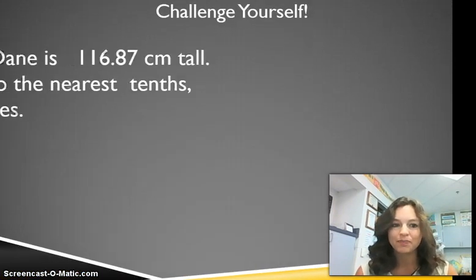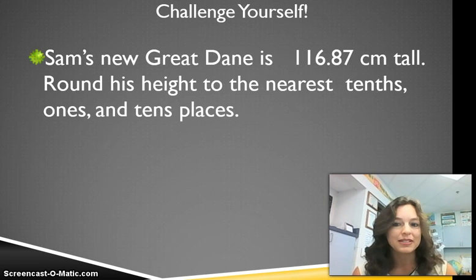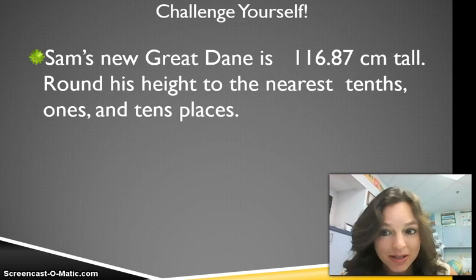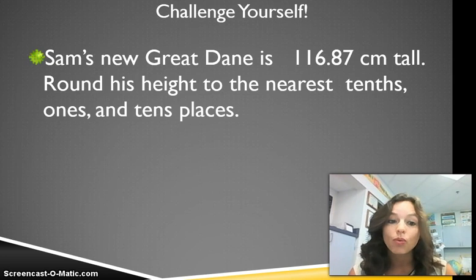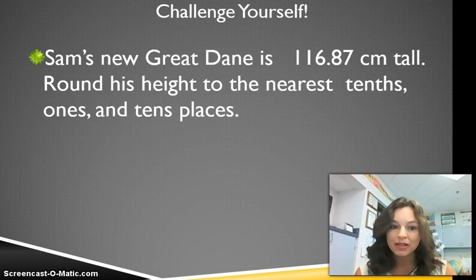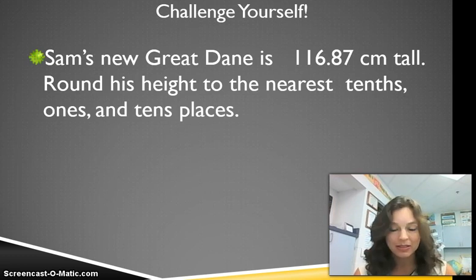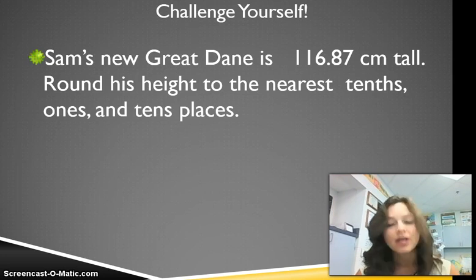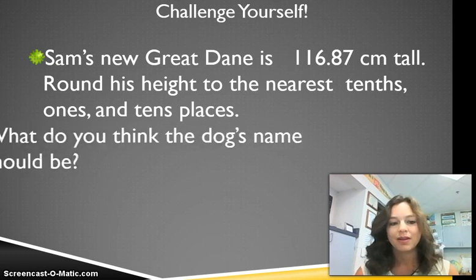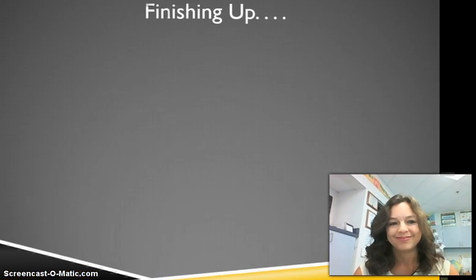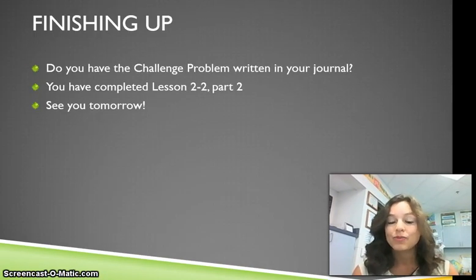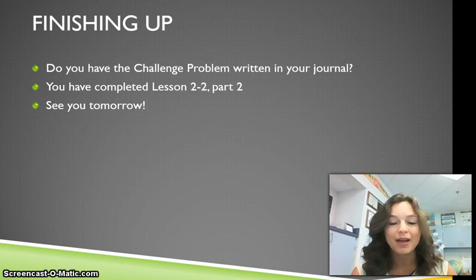Now you get to challenge yourself. Sam's new Great Dane is 116 and 87 hundredths centimeters tall. Round his height to the nearest tenths, ones, and tens place. You're going to write this number three times — first rounding to the nearest tenths, then to the ones place, then the tens place. The first time you're rounding to the decimal; the second and third time you're rounding whole numbers. Also, what do you think the dog's name should be? Make sure you have the challenge problems in your journal and have completed lesson 2.2 part 2. See you tomorrow.